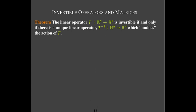Not every linear operator is invertible. But we can say it's invertible if and only if there's a unique linear operator — the inverse of T, or T-inverse — which undoes the action of T. That means if v is the input and T produces vector w, then T-inverse takes w as input and gives v as output, for every vector v in Rⁿ.